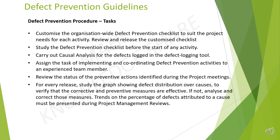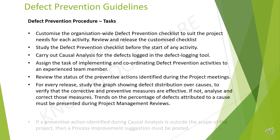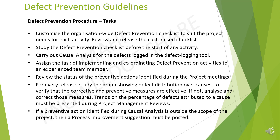For every release, study the graph showing the defect distribution over causes, to verify that the corrective and preventive measures are effective. If not, analyze and correct those measures. Trends on the percentage of defects attributed to a cause must be presented during project management reviews. And finally, if a preventive action identified during causal analysis is outside the scope of the project, then a process improvement suggestion must be posted.